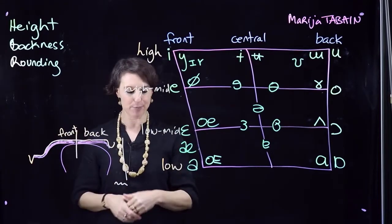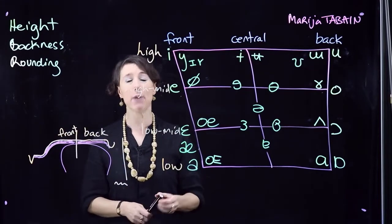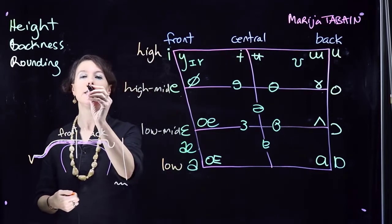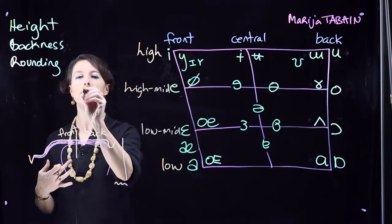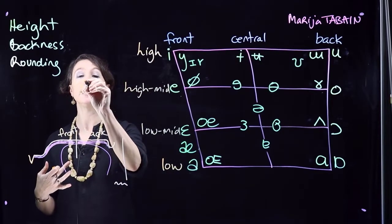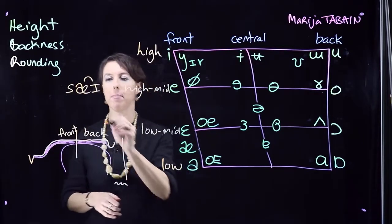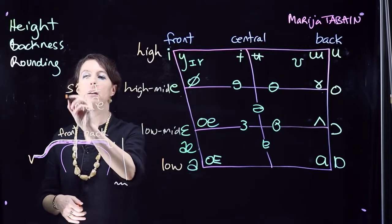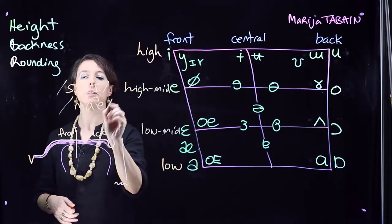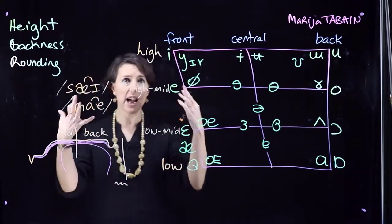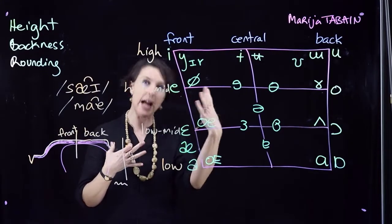The first thing you can do is produce diphthongs, like we have in English. In my dialect of English we have 'say' as in 'say,' and 'I' as in 'my' – plenty of diphthongs you can have, just combining two vowel targets into one vowel sound.